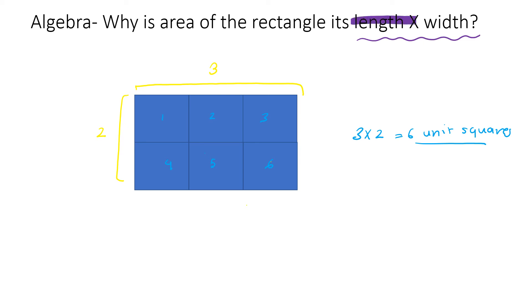So in this case, our three would be our length, and this is our width. So length times width is equal to L×W. And if we put that for this example, that would be three times two is equal to six.